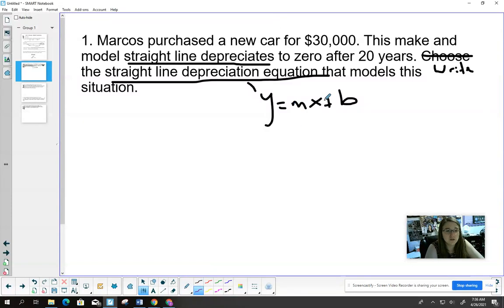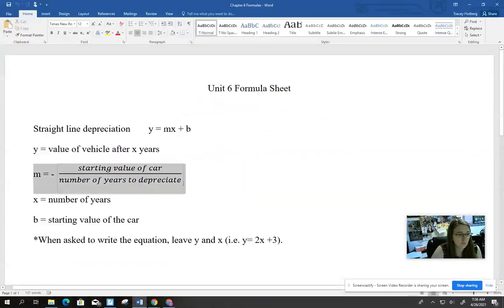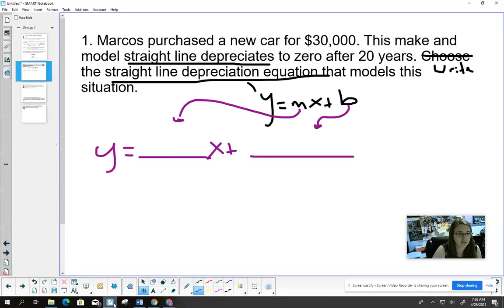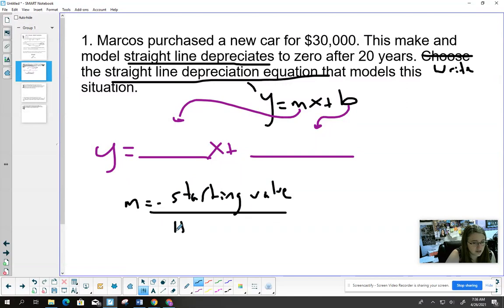You have to remember that the Y and X stay put - it's the M and B that get plugged in. On your formula sheet, it tells you what M and B are. M equals negative starting value over number of years to depreciate. Take a moment and find our M in this question.